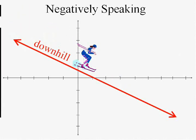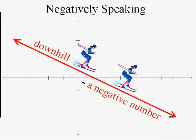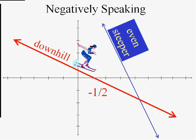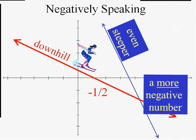Whereas if we looked at this line and tried to walk from left to right, we'd still be going downhill — that would be a negative slope. In fact, it would be negative one-half. This line would have a slope that's even more negative; in fact, it is negative three. That's a more negative slope.